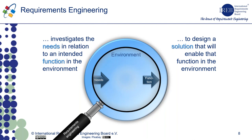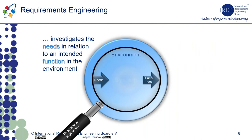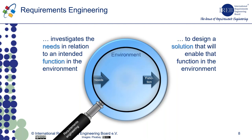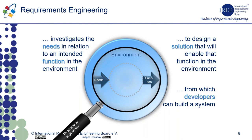At a high level, we can define the scope of requirements engineering as follows: we talk about a system providing a function to its environment, and the environment poses needs upon the system. Requirements engineering is about investigating those needs in relation to the intended function. We study the needs and the intended function to design a solution that will enable this function. That solution is then developed by developers who build the system. Requirements engineering doesn't involve thinking about the system — it's only about the needs and the intended function.